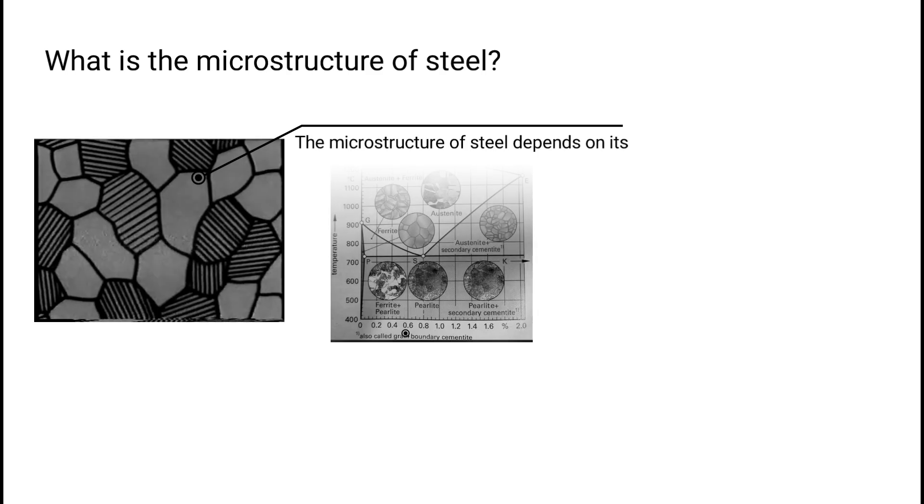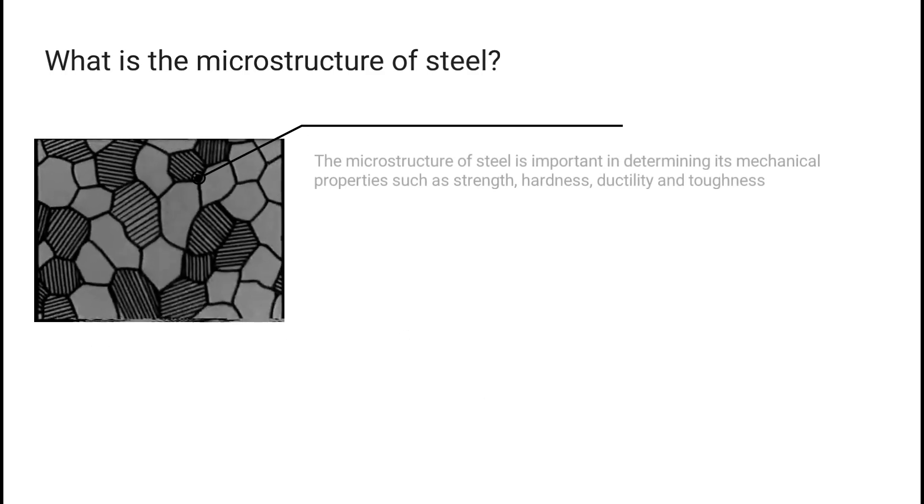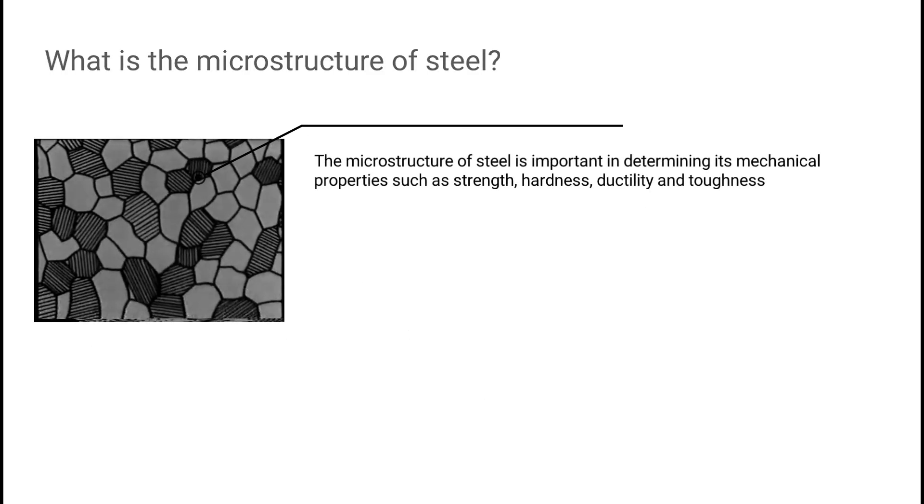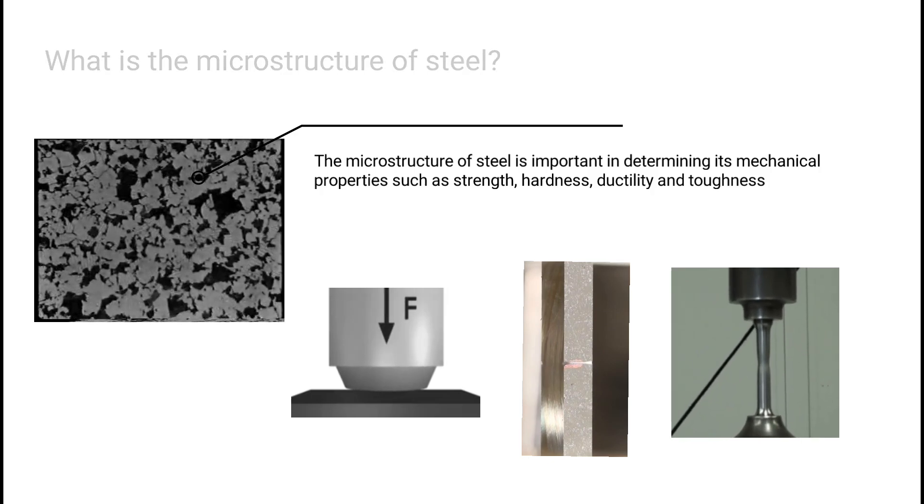The microstructure of steel depends on its composition, heat treatment, and cooling rate during its manufacturing process. The microstructure of steel is important in determining its mechanical properties such as strength, hardness, ductility, and toughness.